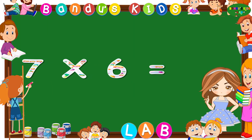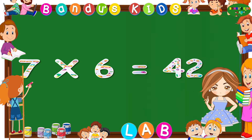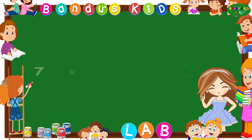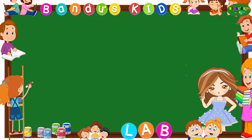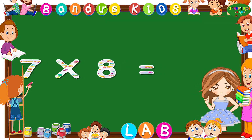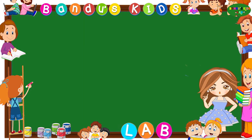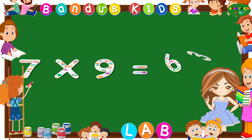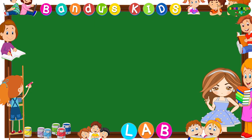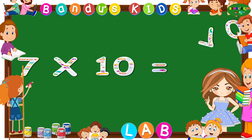Seven sixes are forty-two. Seven sevens are forty-nine. Seven eights are fifty-six. Seven nines are sixty-three. Seven tens are seventy.